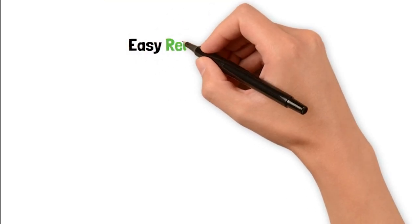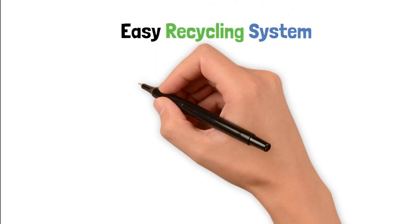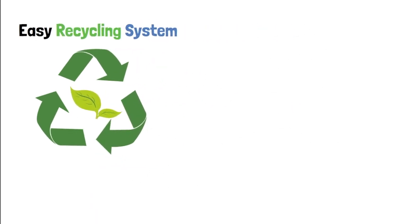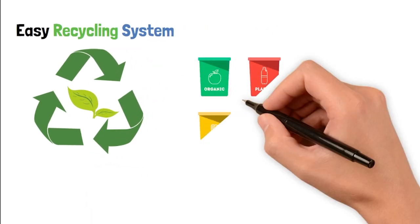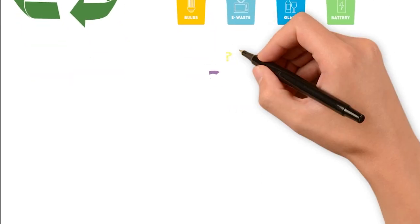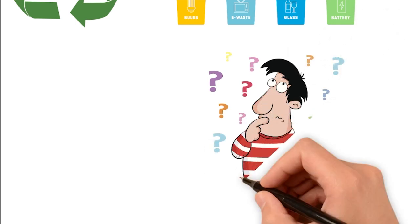On to recycling now. An easy recycling system is all about making recycling a breeze for both you and your guests. Here's the deal. Set up some clearly marked recycling bins in the important spots around your place. Kitchen, living room, bathroom, you know the drum. Keep the labels simple so no one gets confused about what goes where.